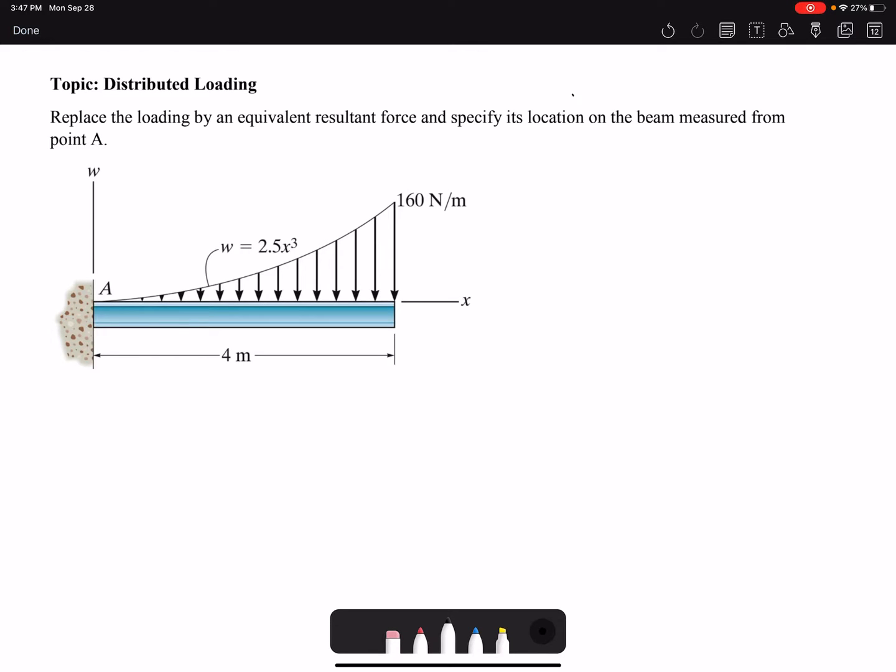Hello everyone, this problem is asking for replacing the load by an equivalent resultant force and specifying its location on the beam measured from point A. Because it's a distributed load and we have a function, we can find FR.